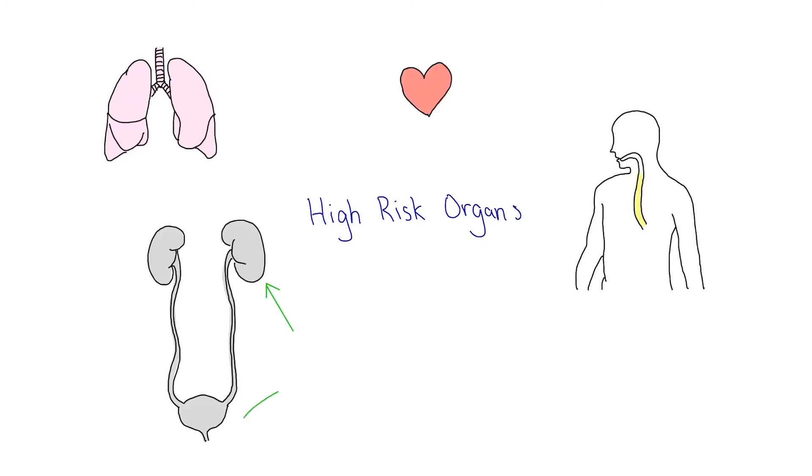Based on RNA sequencing, SARS-CoV-2 more readily infects organs like the lungs, heart, esophagus, kidneys, bladder, and ileum, which brings us to the symptoms.